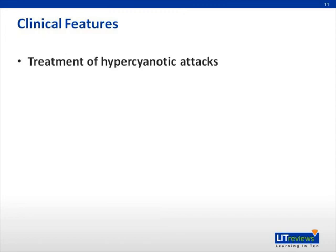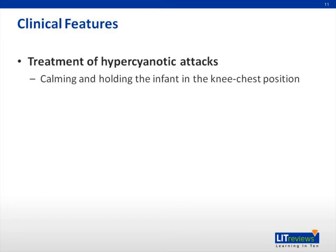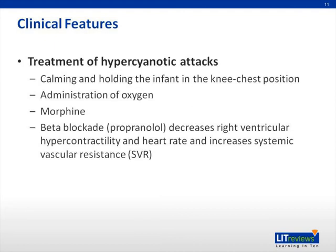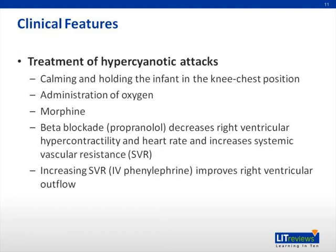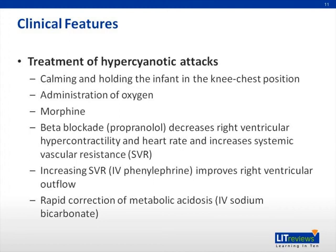Treatment of hypercyanotic attacks involves promoting blood flow across the pulmonary valve and not across the VSD. The first measure involves calming and holding the infant in the knee-to-chest position, which decreases pulmonary vascular resistance and promotes increased blood volume to the right ventricle. Administration of oxygen and morphine also promote a decrease in pulmonary vascular resistance. Beta blockade, typically with propranolol, is used to decrease right ventricular hypercontractility and heart rate, and to increase systemic vascular resistance (SVR). Increasing SVR, typically with IV phenylephrine, improves right ventricular outflow by limiting blood flow from the right ventricle through the VSD. Rapid correction of metabolic acidosis with IV sodium bicarbonate decreases pulmonary vascular resistance.